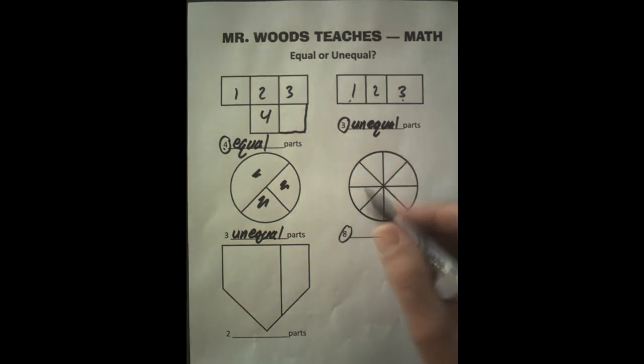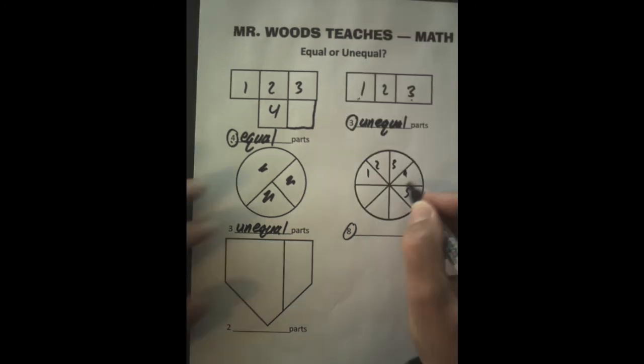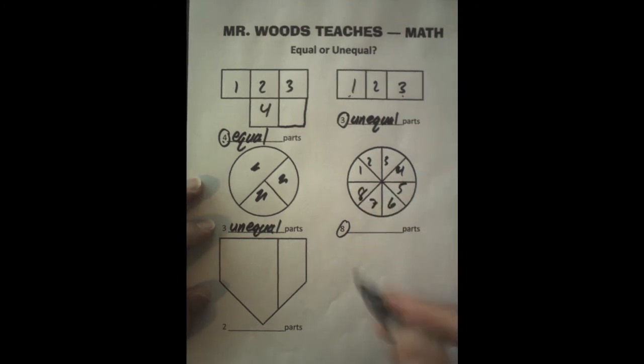It says here it's eight. Let's double check. One, two, three, four, five, six, seven, eight. So there's eight. And they appear to be equal. So we're going to say equal parts.